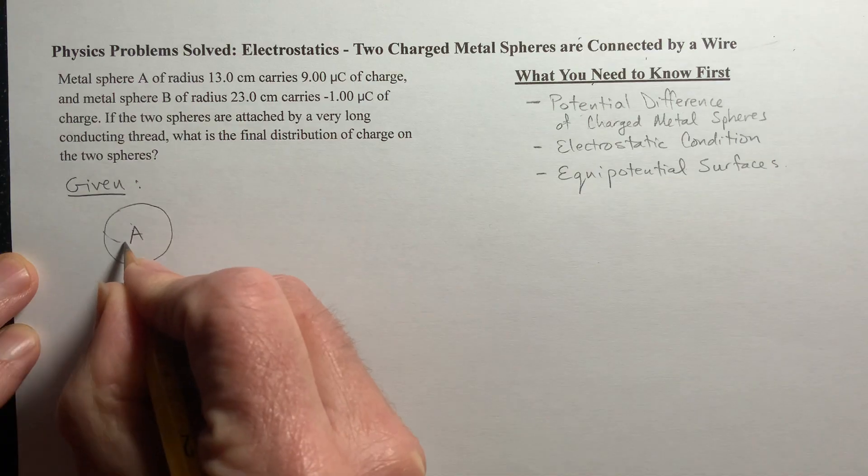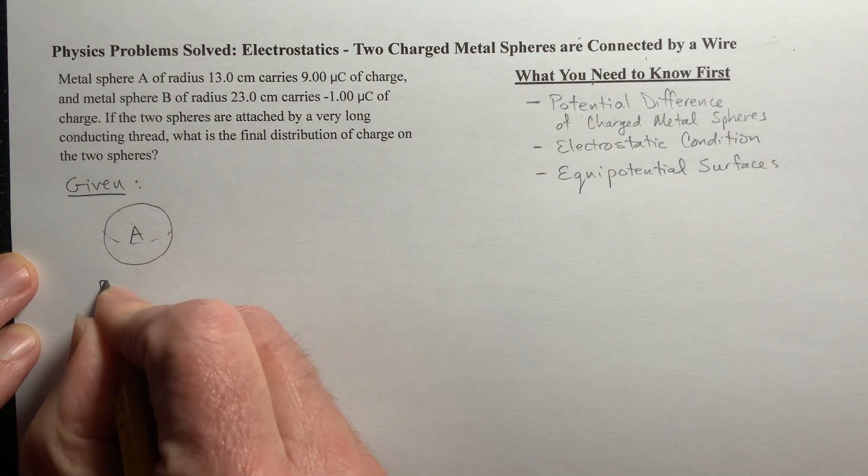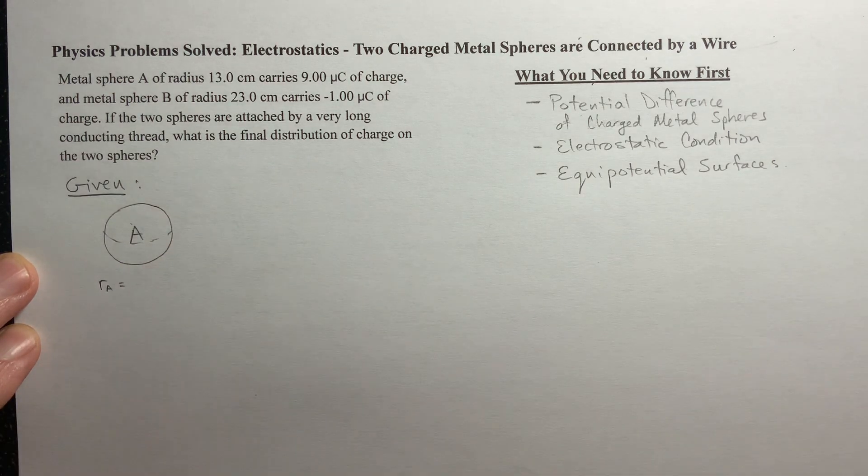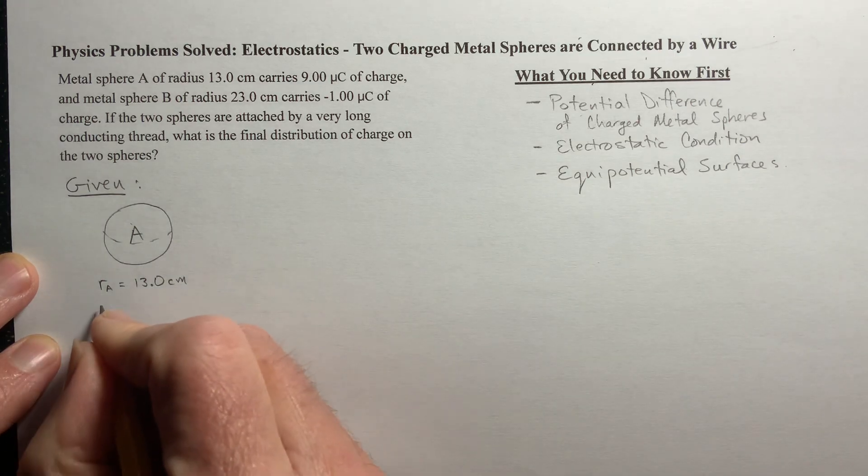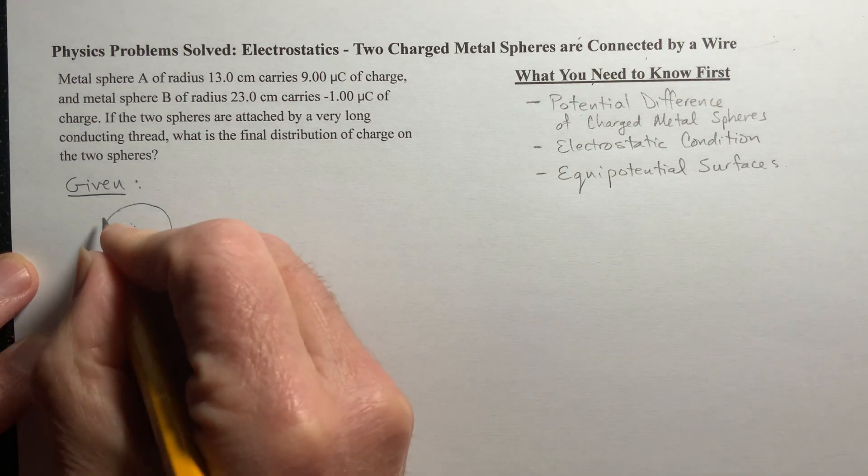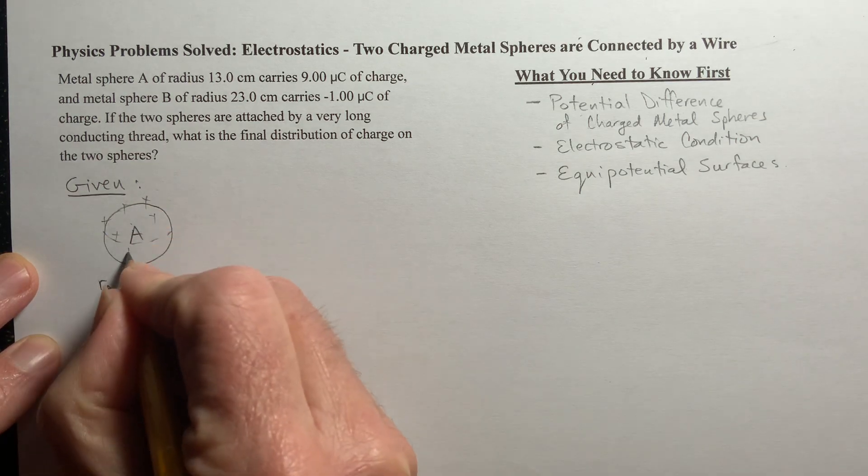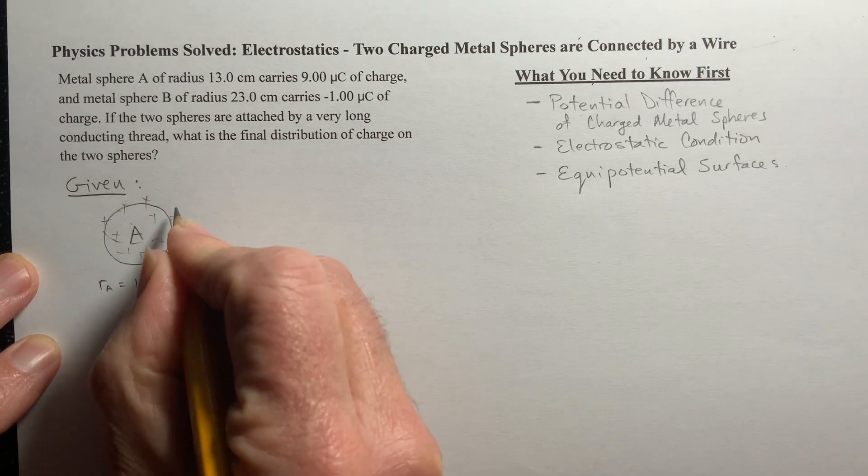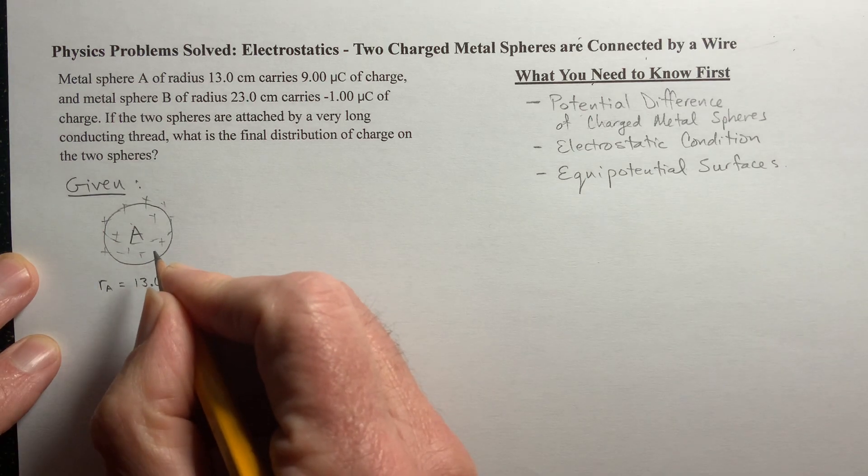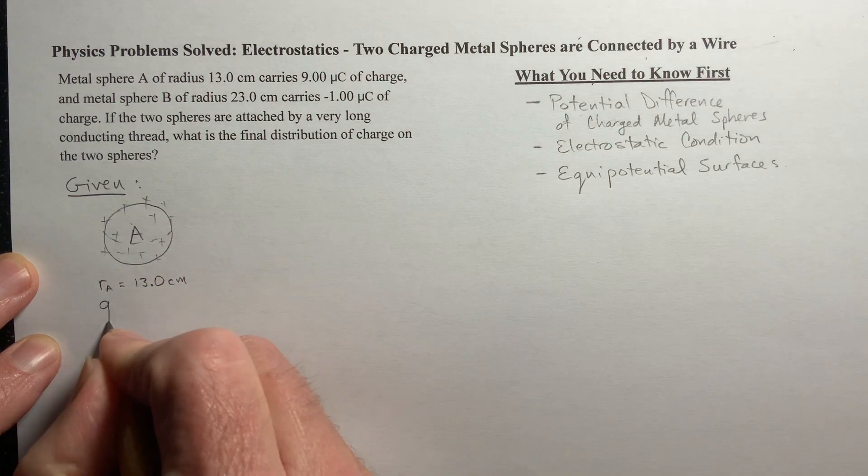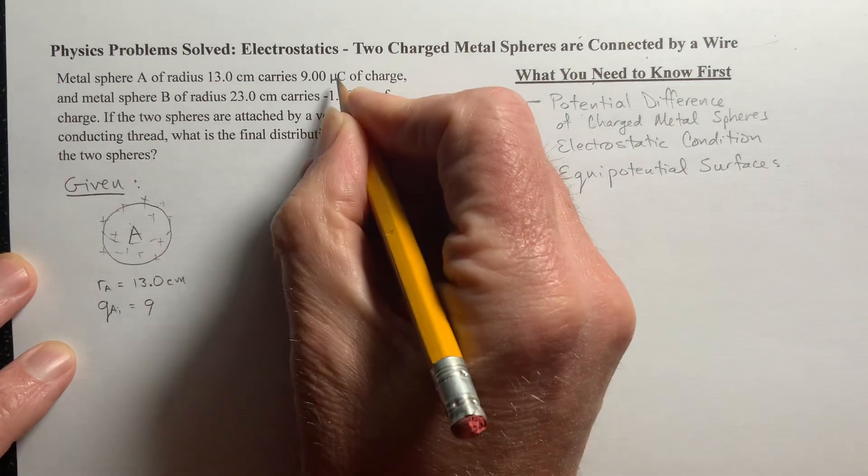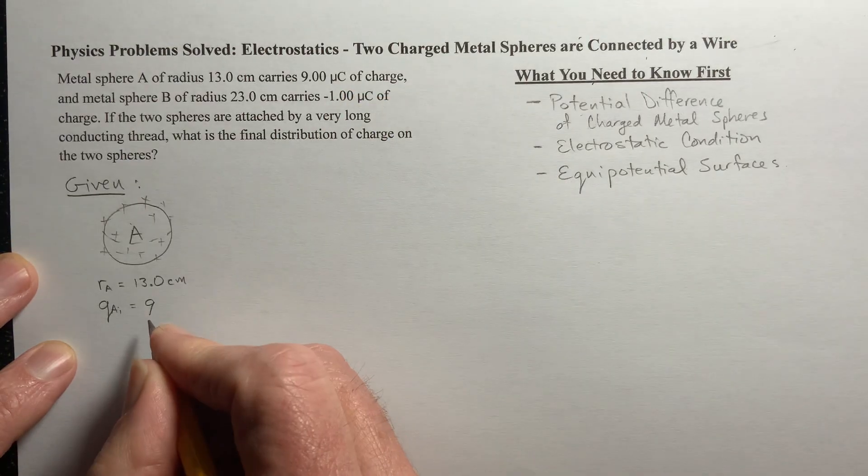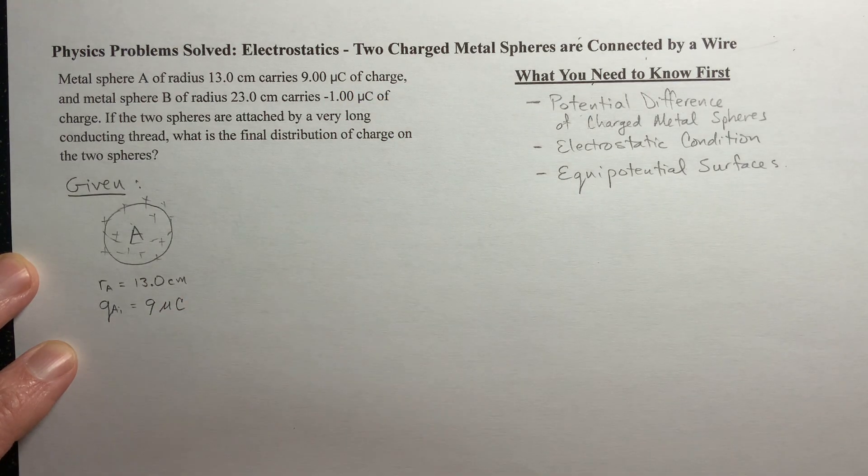So here's sphere A. And we know that it has a radius of 13 centimeters, which we might be changing that to meters. And we know that there's initially a charge on it of 9 microcoulombs. So the initial charge on A is 9 microcoulombs of charge.